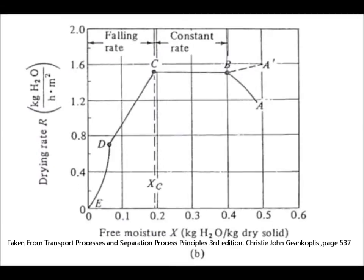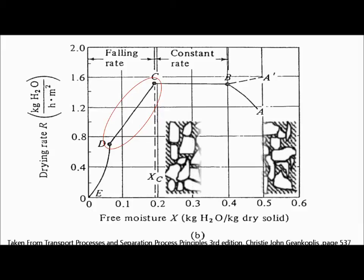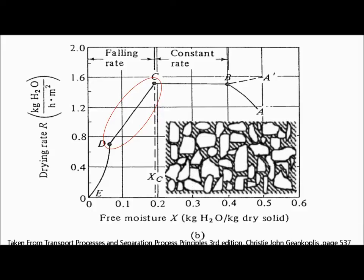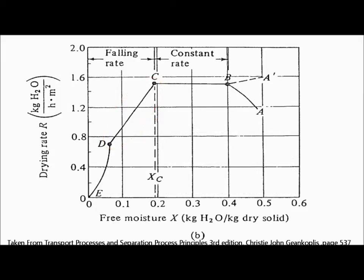After the critical moisture content, xc, has been exceeded, falling rate drying begins. At first stage, particle surfaces are partially wet because not enough moisture can be transported from within the material to keep the entire surface moist.